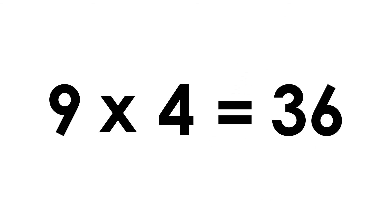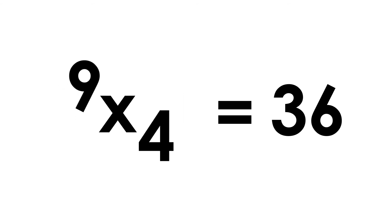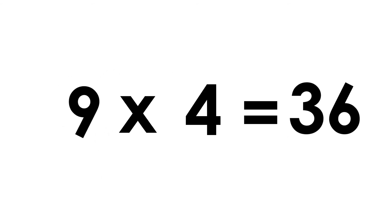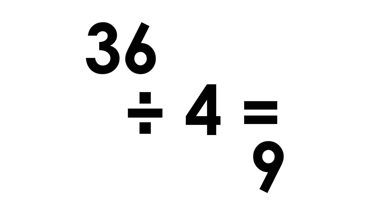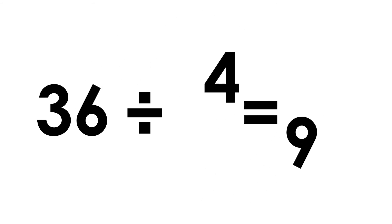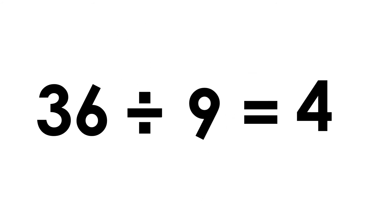Nine fours are thirty six. Four nines are thirty six. Thirty six divided by nine is four.